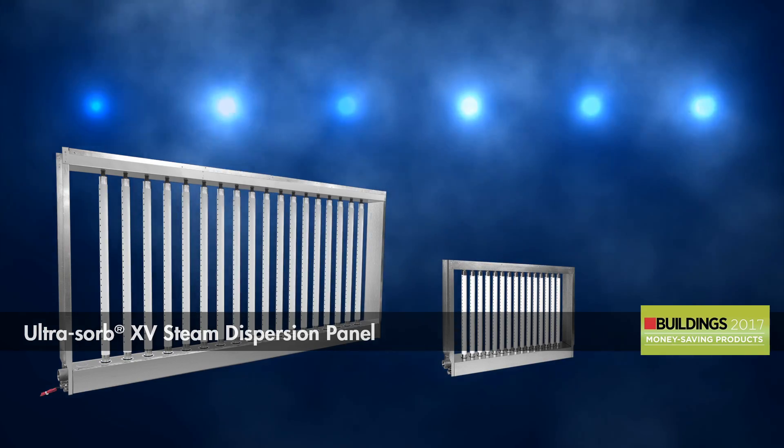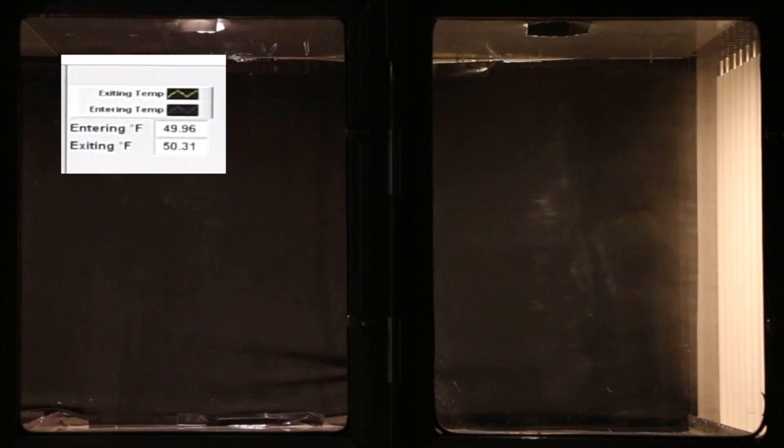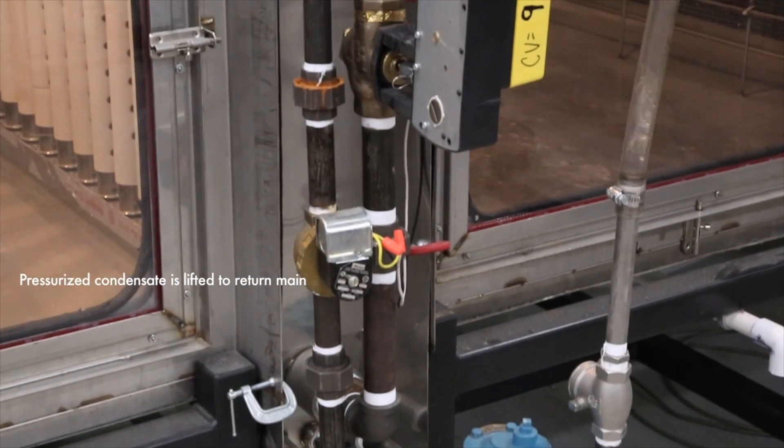Of all the steam dispersion panels on the market, Ultrasorb XV is the most efficient, has the shortest non-wetting distance, and heats downstream air the least. And it's the only one with pressurized condensate return.